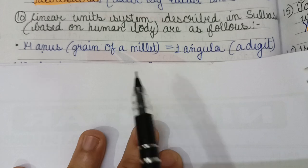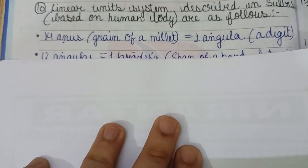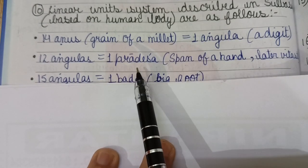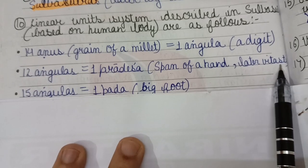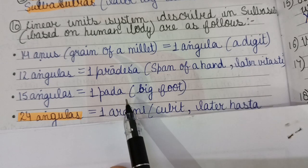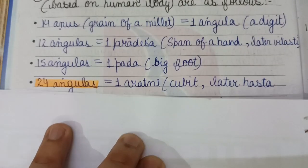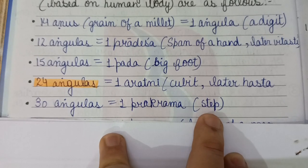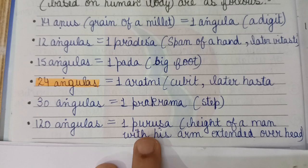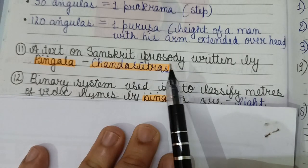The linear measurement system used in ancient India, based on the human body, is as follows: 14 Anus (grains of millet) equal one Angul or digit; 12 Anguls equal one Pradesh (also known as Vitashti, a span of hand); 15 Anguls equal one Pad (a foot); 24 Anguls equal one Aratni or Cubit (also known as Hasta); 30 Anguls equal one Prakrama, equivalent to one step; and 120 Anguls equal one Purusha, the height of a man with arms extended overhead.